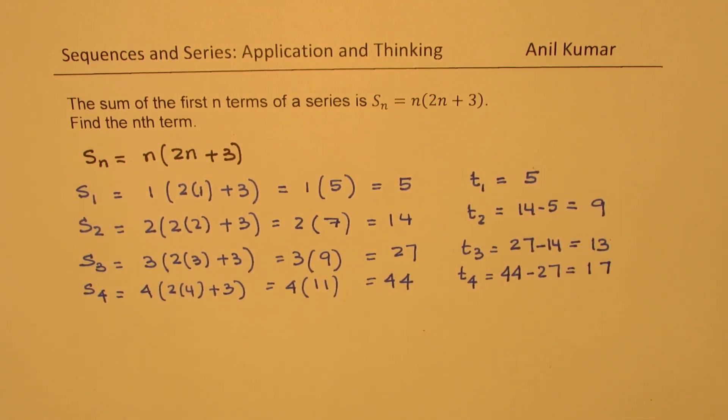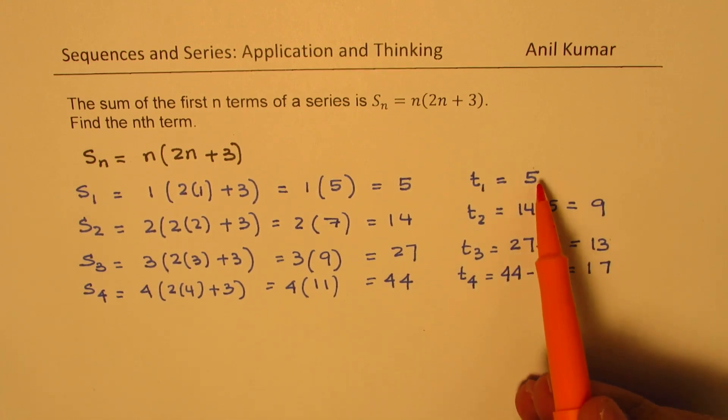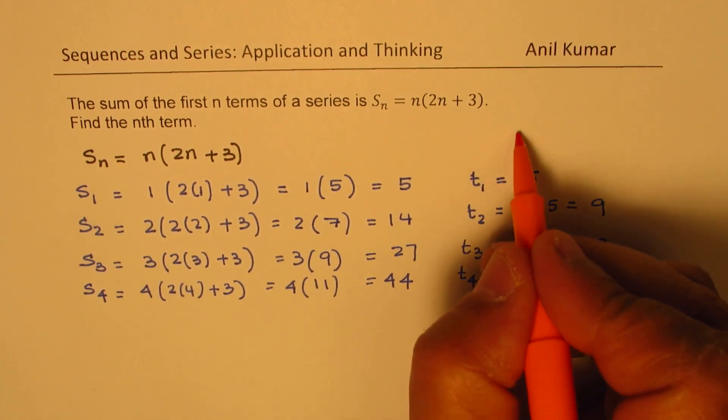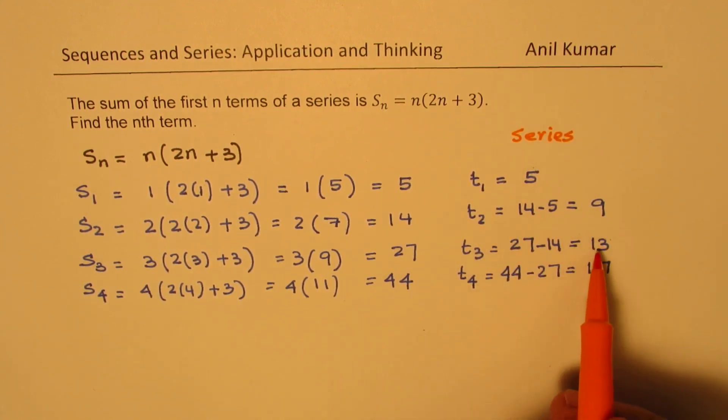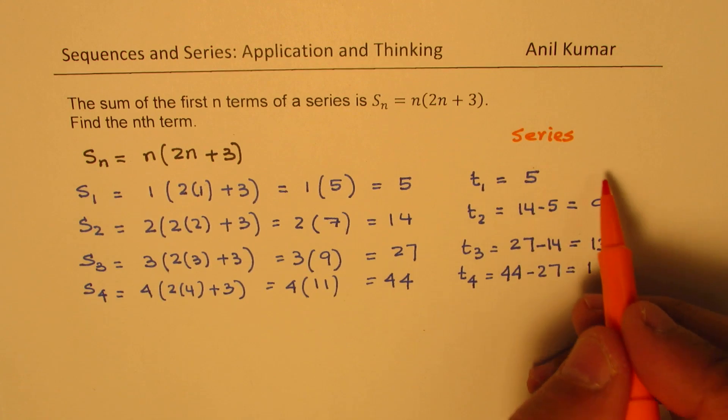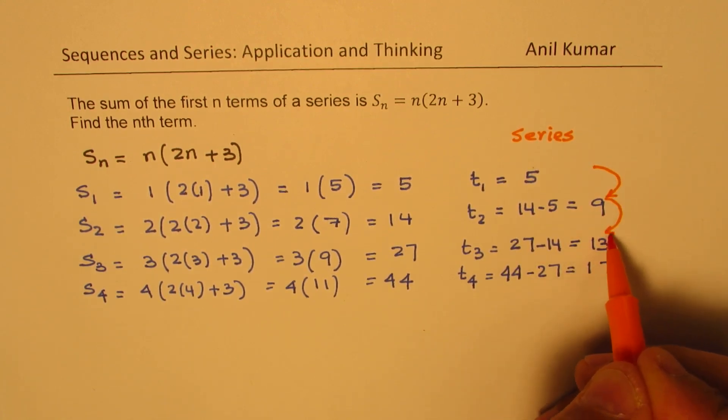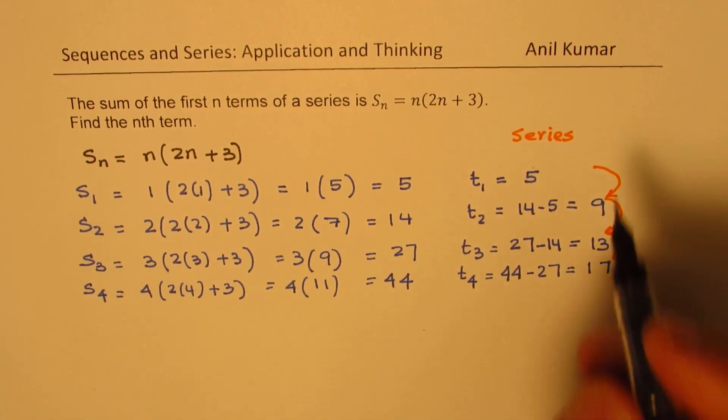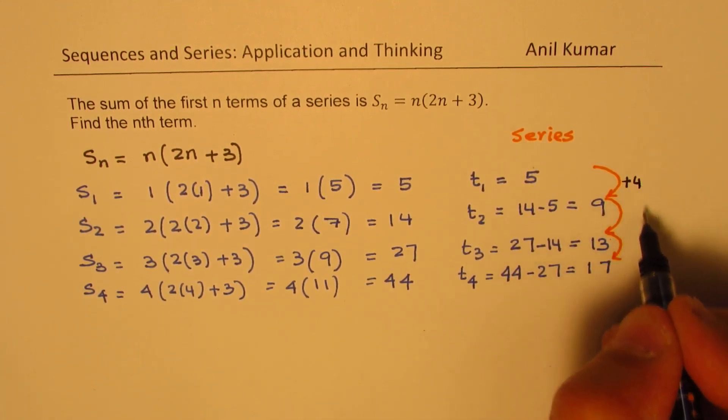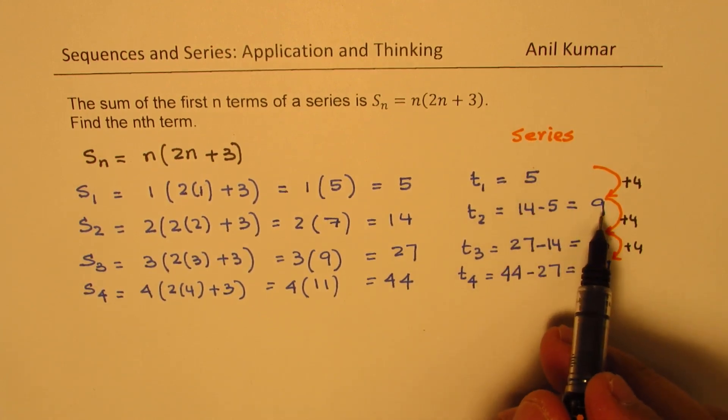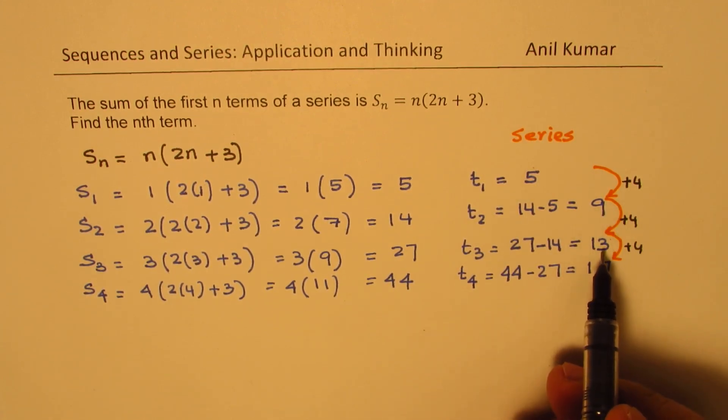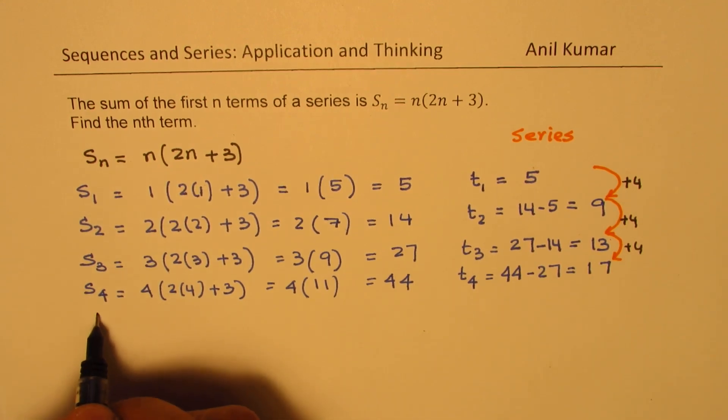So now we get a series in which the first term is 5. So that is our series in which 5, 9, 13, and 17 are the terms. So let's find the common difference between these. You see every time we are adding by 4 to get to the next term. 5 plus 4 is 9, 9 plus 4 is 13, 13 plus 4 is 17. So that means we have arithmetic series.